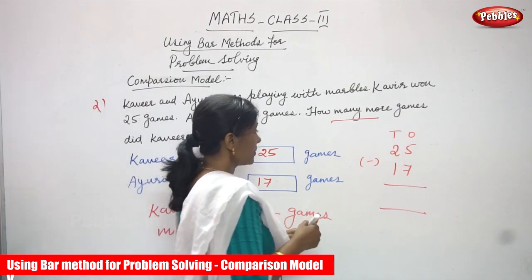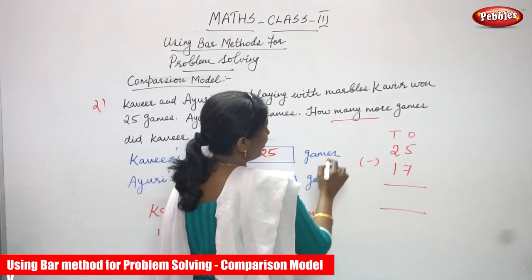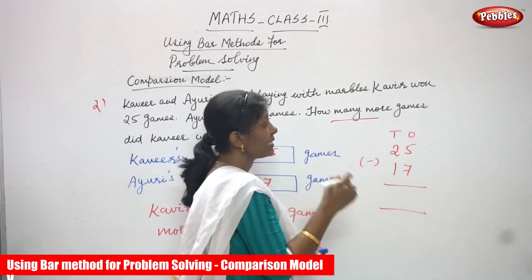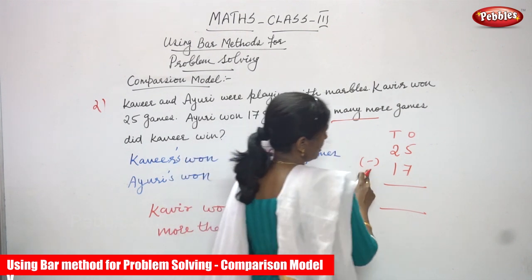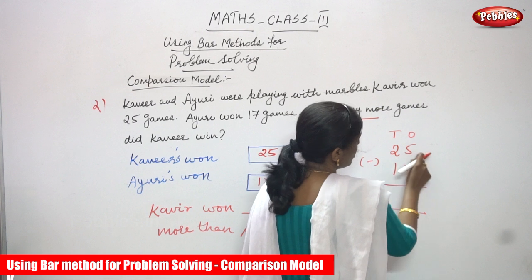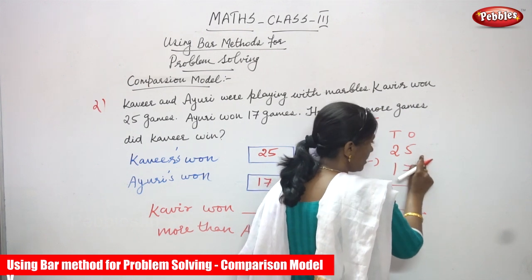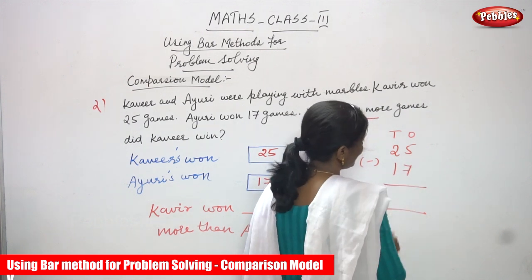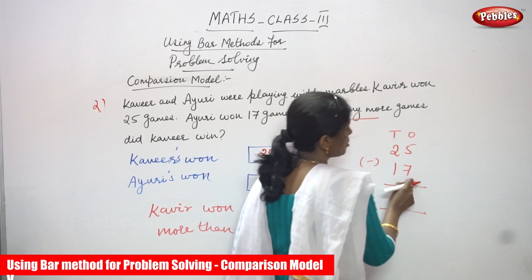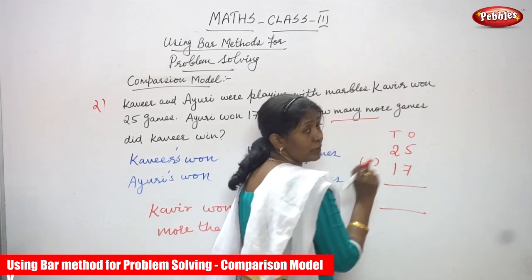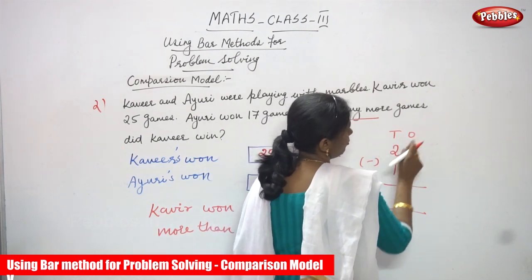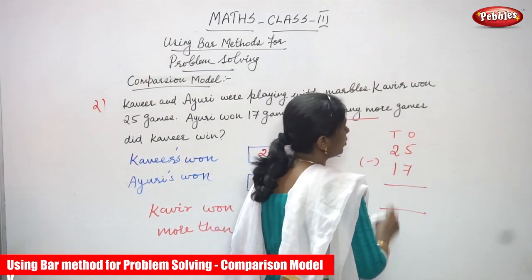Since 'how many more' is a clue word for subtraction, we apply a subtraction sign. Kaveer won 25 games and Ayuri won 17 games — this is a two-digit subtraction, so first you have to write the place value.